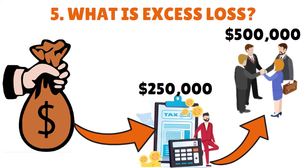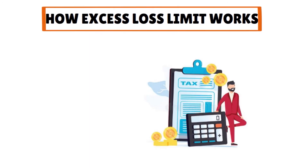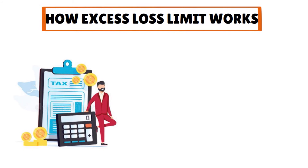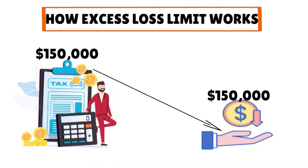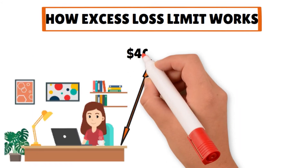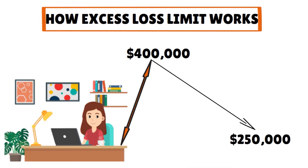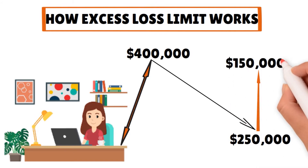Let's explain quickly how the excess loss limit works. Let's say Donald, a single taxpayer, had a business loss of $150,000 this year. Since it was less than $250,000, he can take the full $150,000 of loss on his tax return. Now let's say Elizabeth, a single taxpayer, has a business loss of $400,000. This amount is greater than the $250,000 limit, so she can only take $250,000 of loss on this year's return, leaving $150,000 of loss that she might be able to carry forward to the next year or beyond.